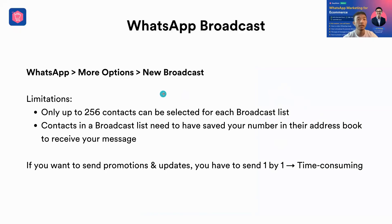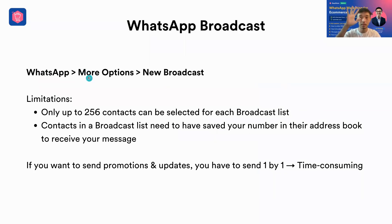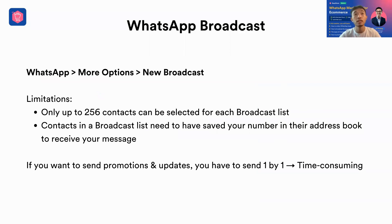To send a broadcast on WhatsApp, go to More Options — the three dots — and click 'New Broadcast.' Then type your message and select the contacts you want to send to. However, there are limitations: you can only select up to 256 contacts per broadcast list.